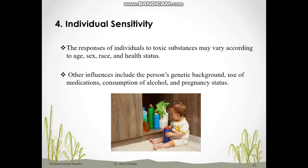The last factor that can determine toxicity of chemicals in the body is individual susceptibility or sensitivity. The responses of individuals to toxic substances can vary greatly, ranging from no response to severe response. Responses may vary according to age, sex, race, and health status, as well as personal genetic backgrounds, use of medication, consumption of alcohol, and pregnancy status. Some chemicals like bee venom can produce severe or life-threatening reactions in persons affected with allergies.